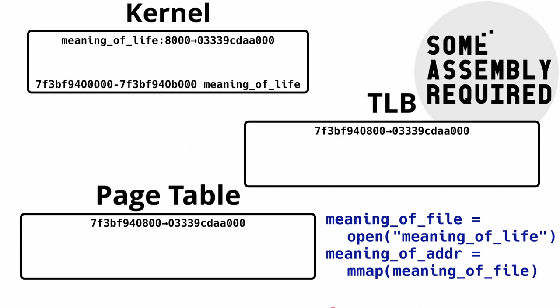This finally brings us to the subject of this video: what happens when you want to remove a mapping? Pay very close attention to the following description — there is something missing from it that breaks the consistency of the whole thing. See if you can catch it. When you remove a memory mapping, the kernel removes the mapping from its internal tables, removes the mapping from the page table, flushes the relevant TLB lines, and frees the physical page. Did you spot the problem?